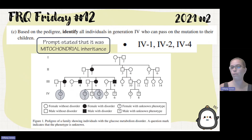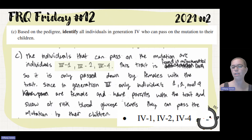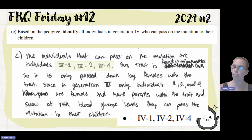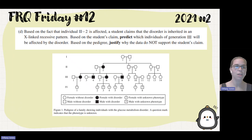Of those individuals who have the trait, which can pass it on? The only one that is not female is number 3, which means 4-1, 4-2, and 4-4 are the only ones who can pass it on, because they are the only females and thus have the eggs to pass on the trait. Individuals who can pass on the mutation are 4-1, 4-2, and 4-4. This trait is mitochondrial, so it is only passed down by females with the trait.